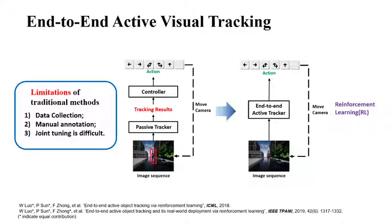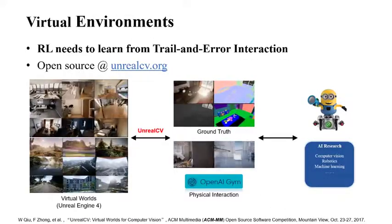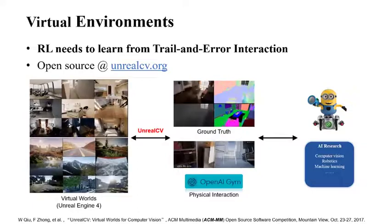The learned hidden representation is more sensitive to the motion of targets rather than being confused by appearance variation. As a result, the learned tracker generalizes easily to tracking different targets in various environments, and the proposed model is more compact than traditional ones.